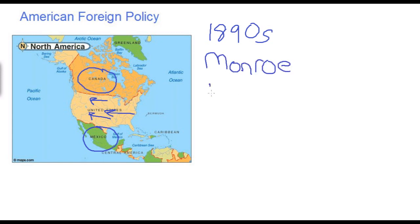The Monroe Doctrine was a policy that influenced American foreign affairs during the 19th century. It essentially argued that the United States would vigorously defend against any efforts by European nations to establish new colonies in North or South America, and that the age of colonization had come to an end. Those were the key factors influencing American policy during much of the 19th century.